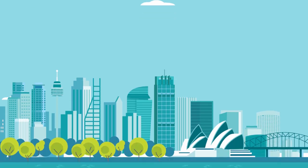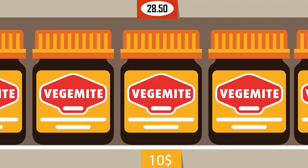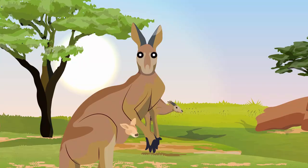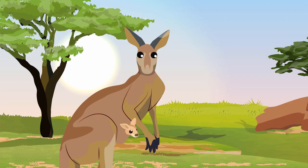Ah, the land down under. Home to the Sydney Opera House, Vegemite, the Great Barrier Reef, kangaroos, and the inland taipan - the most venomous snake in the world?